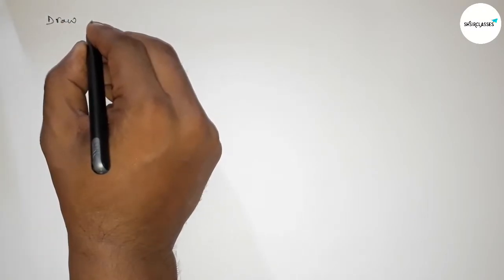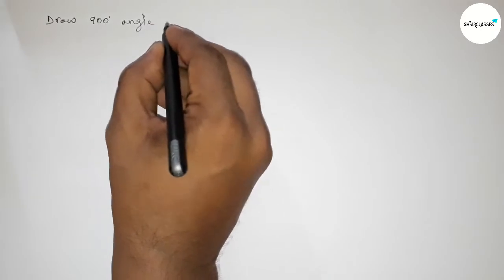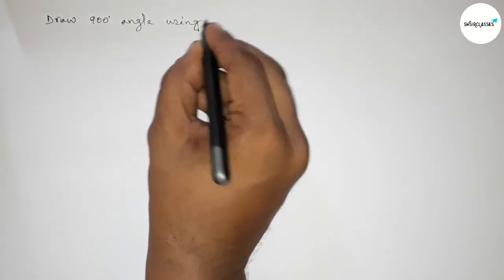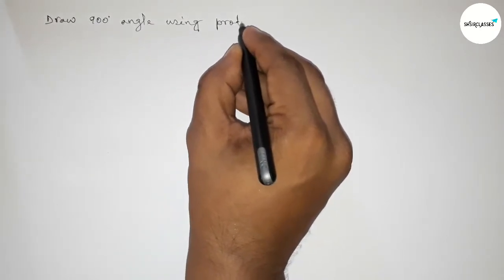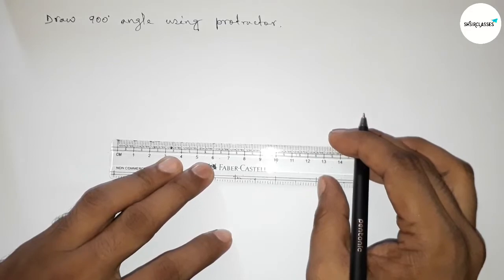Hi everyone, welcome to SI Share Classes. Today in this video we have to draw a 900 degree angle by using a protractor in an easy way. So let's start the video. First of all, we have to draw here a straight line of any length, so first drawing here a line.